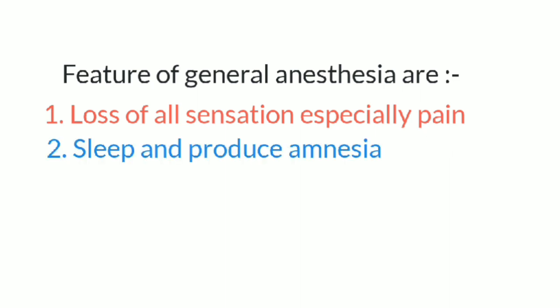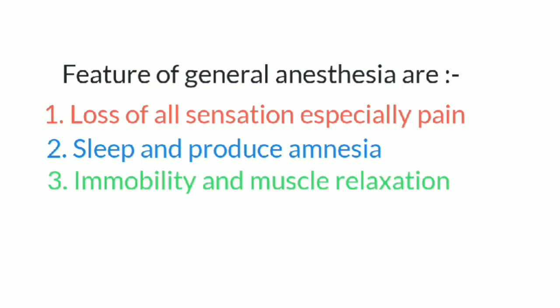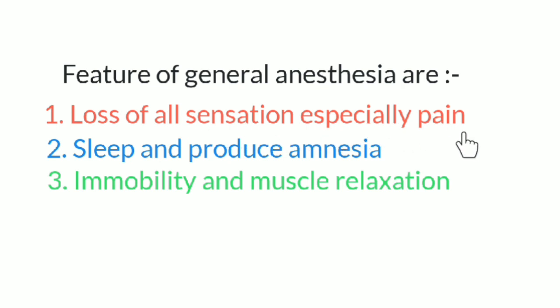The features of general anesthesia are: first, loss of all sensation, especially pain; second, sleep and produce amnesia — amnesia means loss of consciousness, that is loss of memory; third, immobility and muscle relaxation. These are the common features of all general anesthesia drugs.